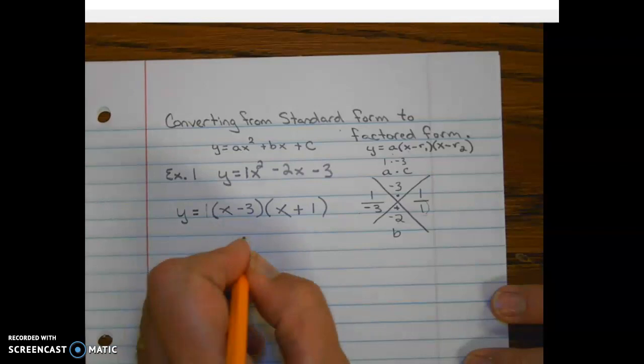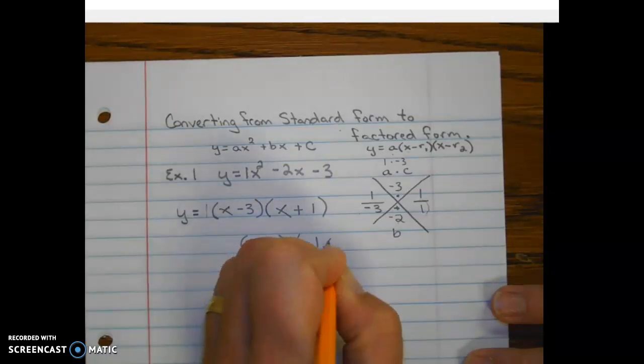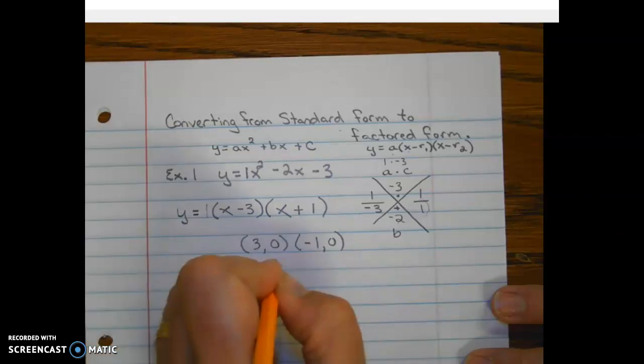So now we know our two roots, or x-intercepts, which is going to be (3, 0) and (-1, 0). And those are our two roots.